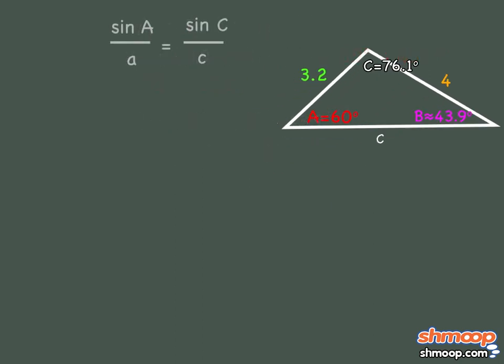One side to go. We can use either the ratio between sine 60 degrees and 4, or sine 43.9 degrees and 3.2. Let's use the ratio between sine 60 degrees and 4. Substitute what we know. We're looking for the last side, c. To solve for side length c, we can rearrange the equation by cross-multiplying.